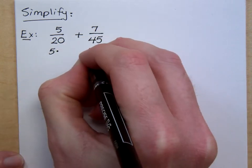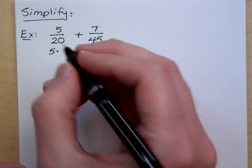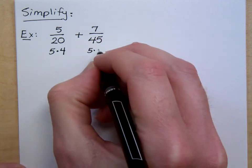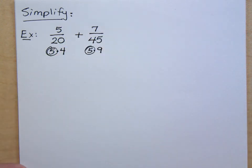So, I can rewrite both of these as 5 times something, right? 20 is 5 times what? 4. And 45 is 5 times? 9. So, I'm just going to go ahead and circle the 5 because they already have that in common.